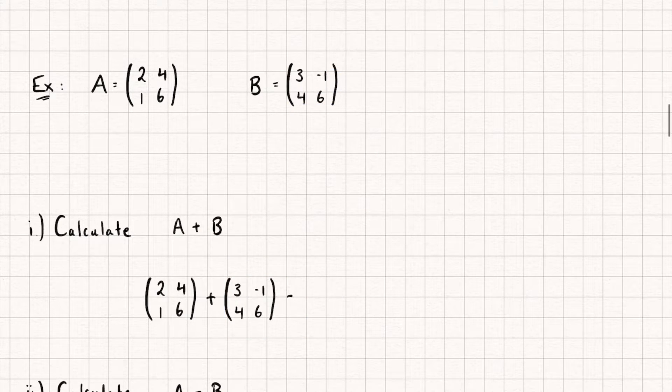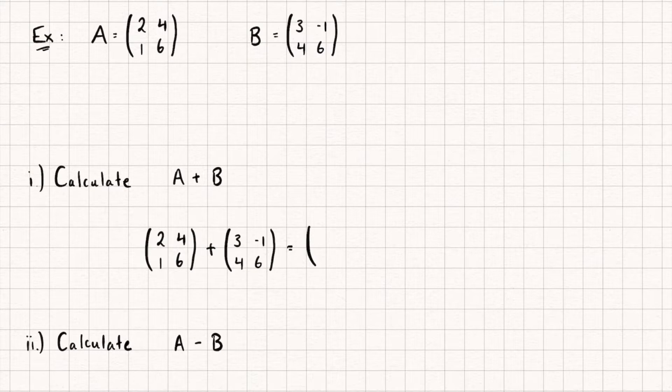So as I say, all we need to do is add the equivalent position. So the top left element of matrix A is going to be added to the top left element of matrix B, or the element in the first row and the first column. So when I add these two together, I get 2 plus 3, which is 5. Let's do the same now for the first row, second column element, and we get 4 plus minus 1, which is 3.